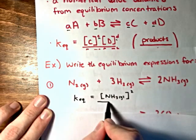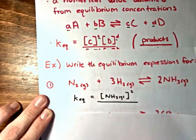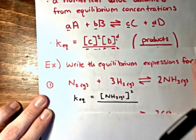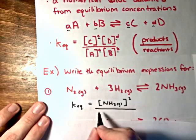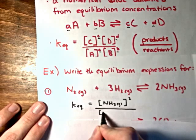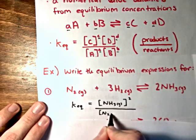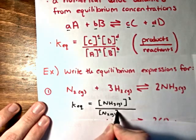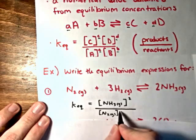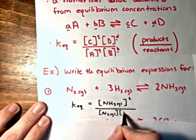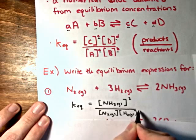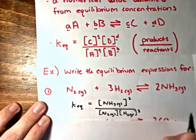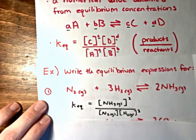That's divided by the concentrations of the reactants. In this case, we have nitrogen gas with a coefficient of 1, and hydrogen gas with a coefficient of 3, so that becomes cubed. And that's our equilibrium expression.